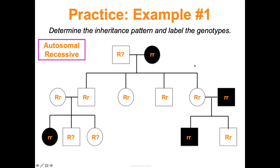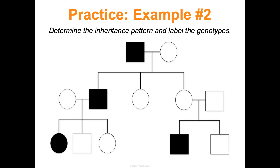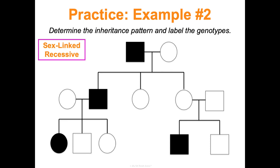For another example, I see three boys affected and only one girl — that suggests sex-linked inheritance, since boys are affected three times more than girls. All the sex-linked traits we look at here are sex-linked recessive.